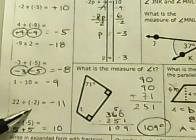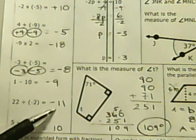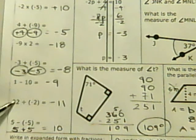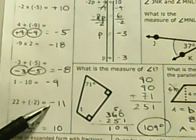22 divided by negative 2 is negative 11. 22 divided by 2 is 11. A positive divided by a negative is a negative.